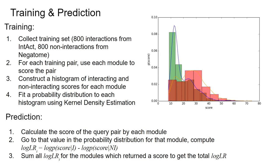Now that we have scores from each module, how do we construct consensus and make predictions? We collected a training set: 800 positive interactions from IntAct, 800 non-interactions from Negatome. We score each pair using the modules, construct histograms of scores, then fit probability distributions using kernel density estimation.